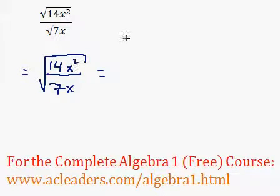So what happens now? Well, 14 over 7 is 2, and x squared over x is just x.